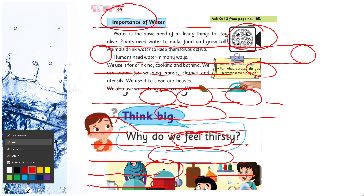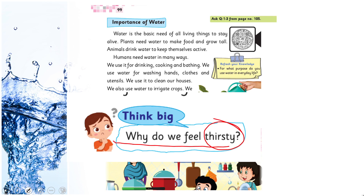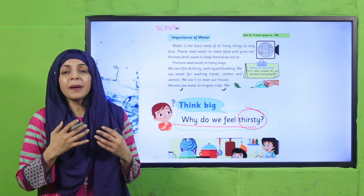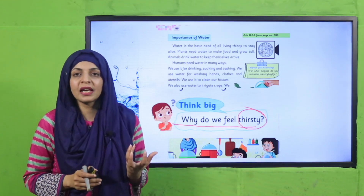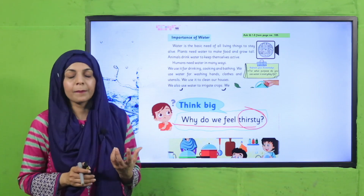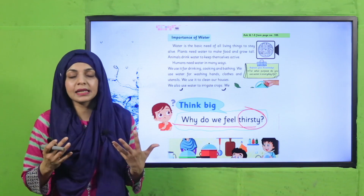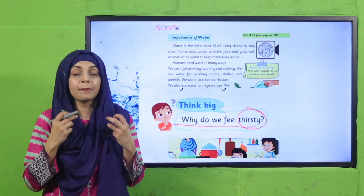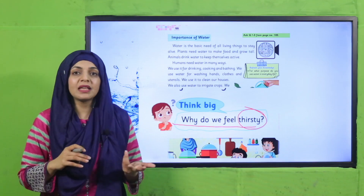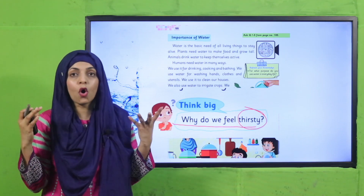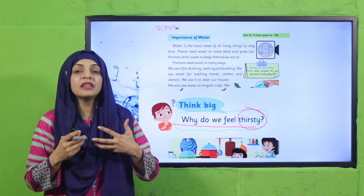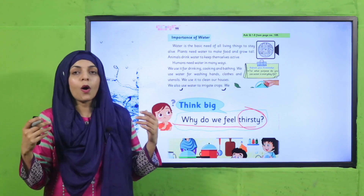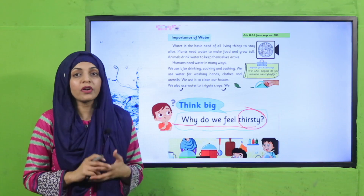Here is something to think about: why do we feel thirsty? There are multiple reasons, some biological. When our body produces more salt, our brain signals us to drink water. Most importantly, when we need to cool down and moderate our body temperature, we need water. For example, on a hot summer day you feel extremely hot — instantly you think of drinking water. That is because your body is very hot and needs water to moderate its temperature. That is why we need water and feel thirsty.